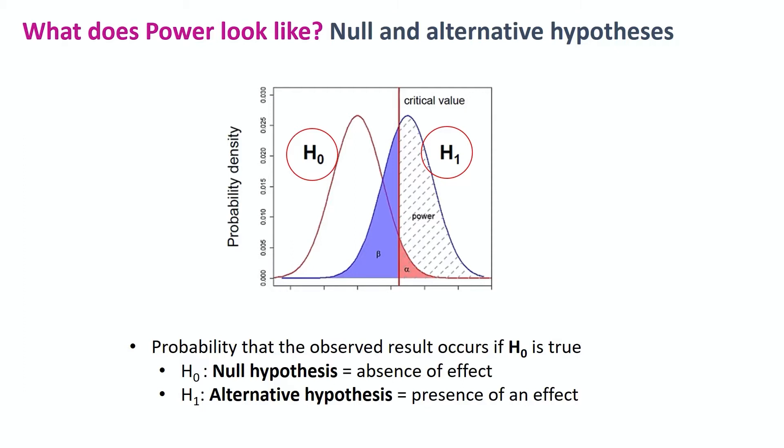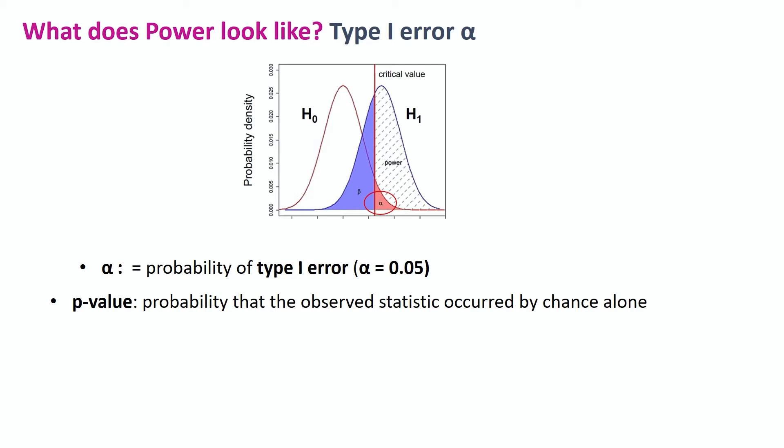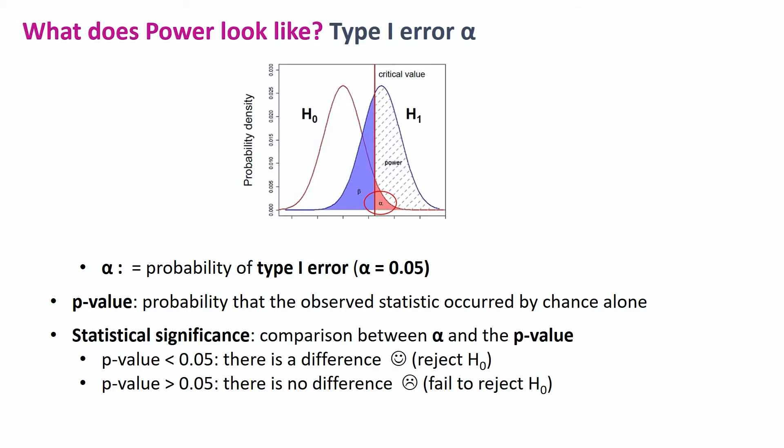Now we have alpha, the probability of a type one error, the one we make when we say there is definitely a difference here, whereas actually there is not. Now we can never be sure, but we want to be as confident as can be. And that confidence usually corresponds to alpha equals 0.05. So the p-value that we get from a test quantifies the probability that the effect we observe occurred by chance alone.